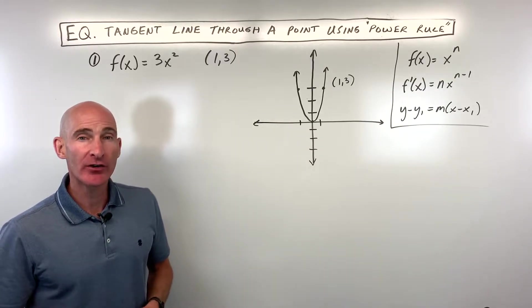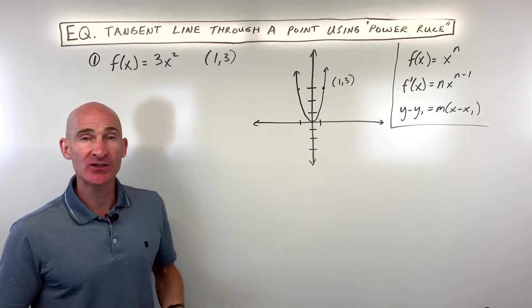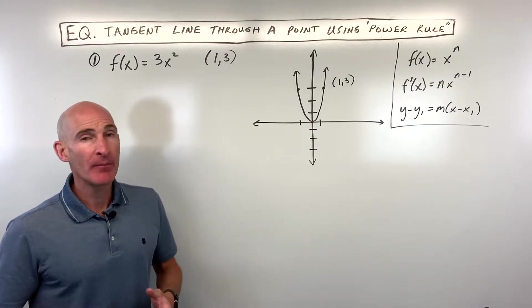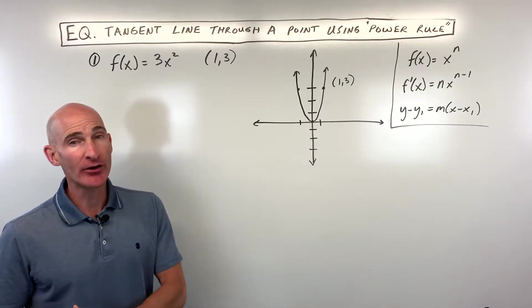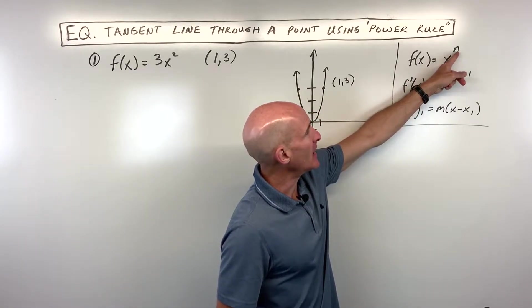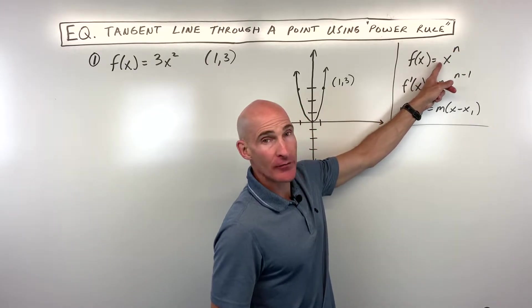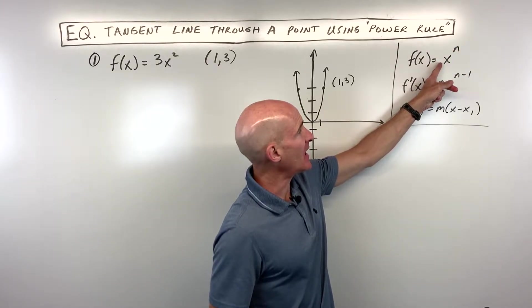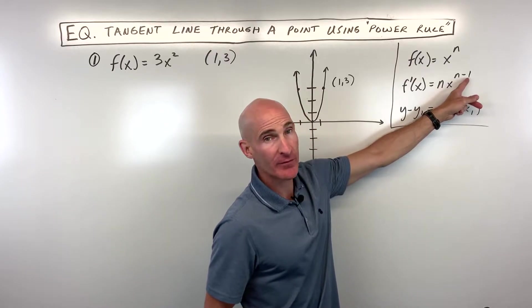Sometimes near the end of pre-calculus, you learn the difference quotient as a way of finding the derivative, but here we're going to use the shortcut learned in calculus called the power rule. The way this works is you take this exponent and bring it down in front of the variable x, and subtract one from the exponent.